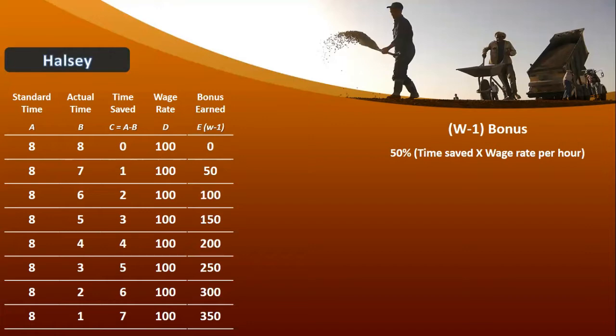Formula ki working: agar standard time 8 hours hai aur actual time 8 hours hi hai to koi saving nahi hai, to bonus bhi nahi hoga. Agar 1 hour save hoga to bonus 50 rupees hai. Jis hisaab se number of hours saving increase ho rahi hai, us hisaab se aapka bonus bhi increase ho raha hai.